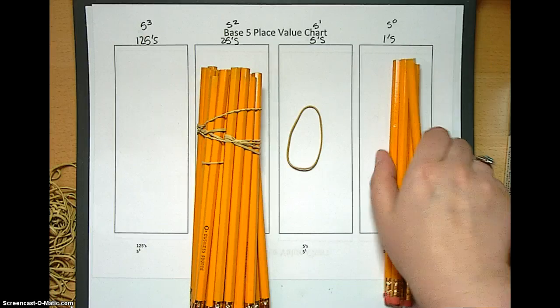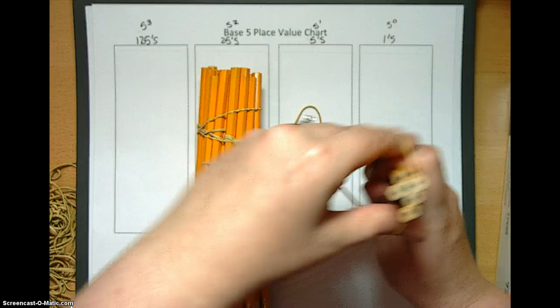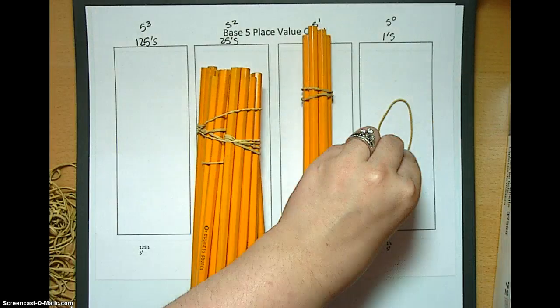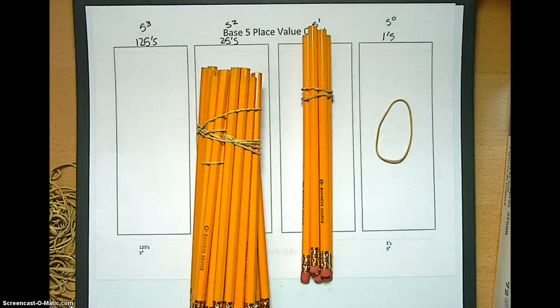And then once we get to the equivalent of 30 in base 10, it's really another bundle of 5. It comes over and we have 1, 1, 0 base 5.